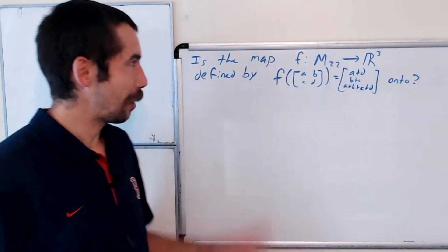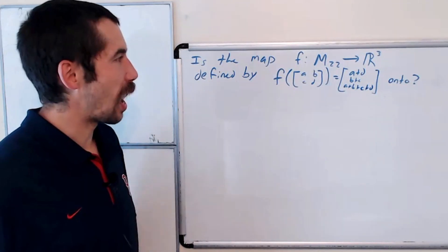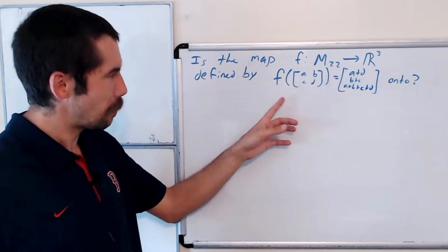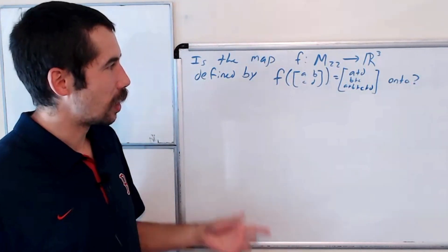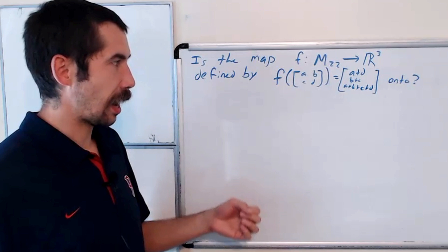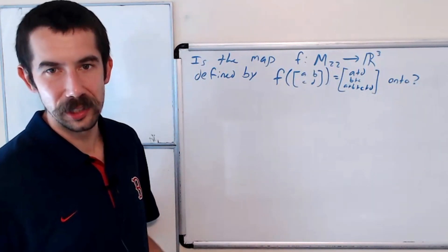Happy learning. Today we're going to answer the following question: Is the map f from M22 to R3 defined by f of ABCD equals A plus D, B plus C, A plus B plus C plus D onto? So is this an onto map?